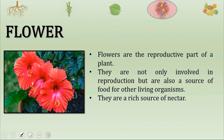Now let us move to the next part of our module: the flower. Flowers are the most beautiful and prettiest part of any plant. They are colorful, attractive, and we feel happy whenever we look at them. Flowers are the reproductive part of the plant. They are not only involved in reproduction but are also a source of food for other living organisms. They are a rich source of nectar. From flowers, we get new plants.